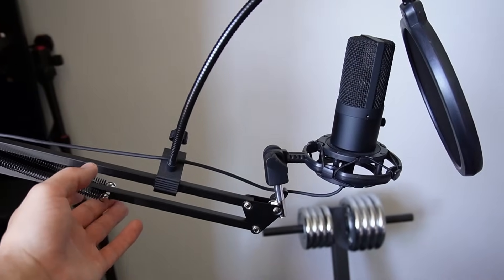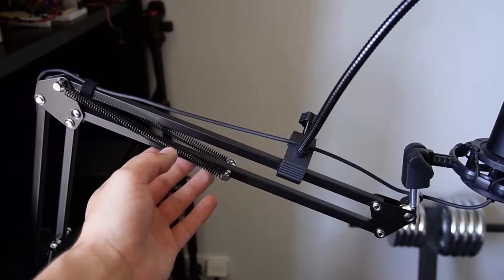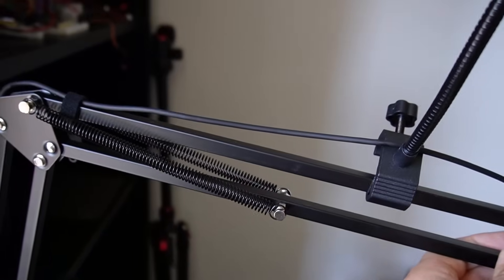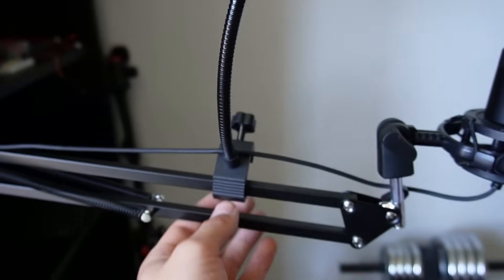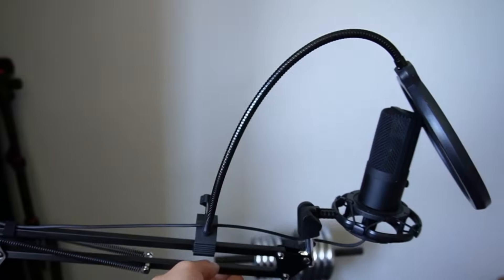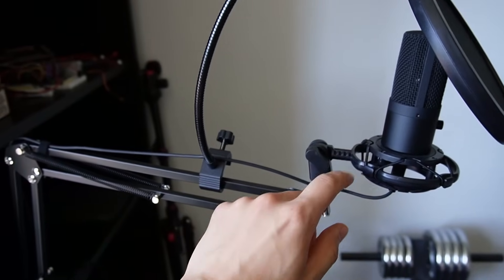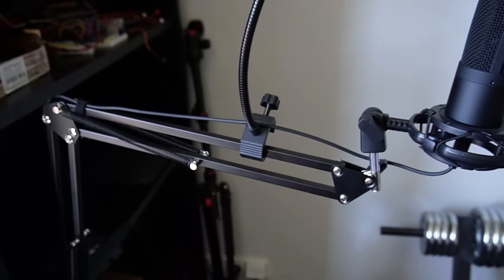I recently got this boom arm for my microphone and it's basically the same mechanism. So you can see this is the four bar linkage and this spring keeps the mechanism stable. You can move this around and the weight of the microphone doesn't make the mechanism just collapse to the ground.